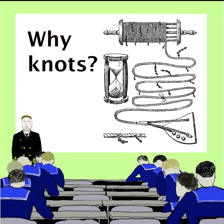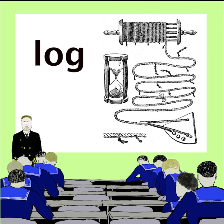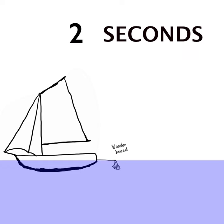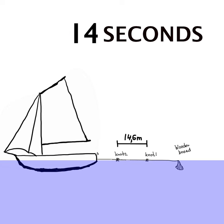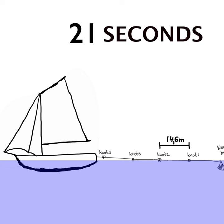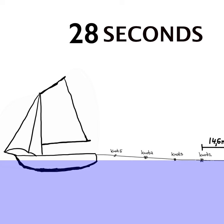The name of this speed unit originates from previous centuries, when the measurement of speed was a big deal. It was done by a primitive device called a log. A floating wooden board was thrown overboard, connected to the ship by a line. This line had knots at intervals of 14 meters, and the quantity of knots paid out over a period of 28 seconds corresponded to the ship's speed in nautical miles per hour.